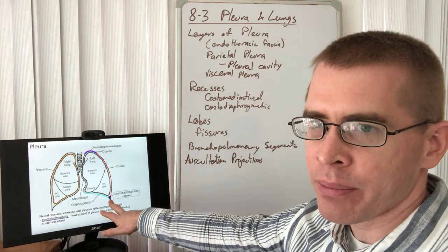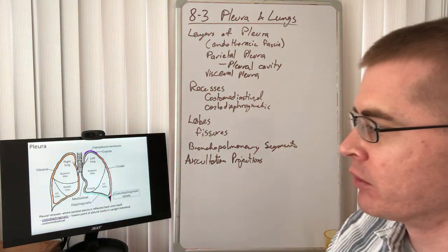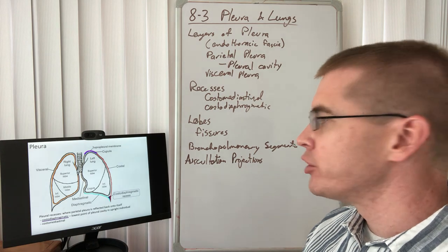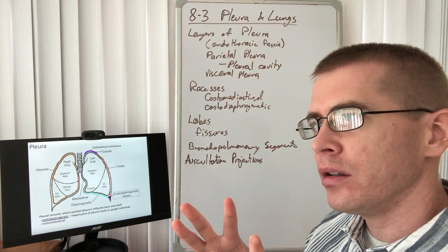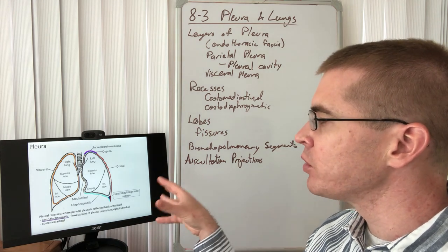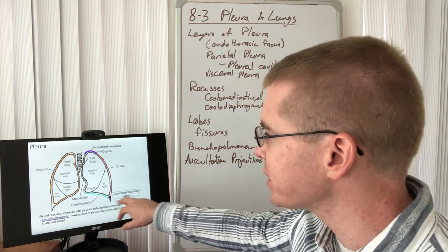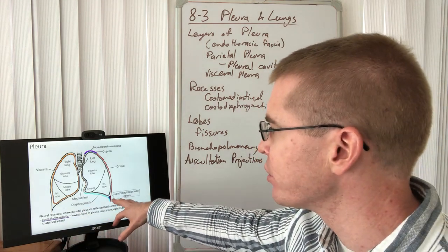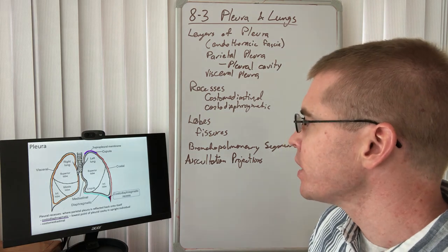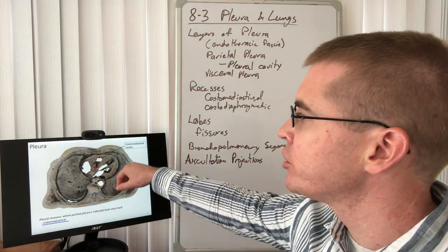The first of these, the costodiaphragmatic recess, is the space between the costal parietal pleura and the diaphragmatic parietal pleura. This is the lowest point in the upright pleural cavity. For this reason, if there is a hemothorax, a buildup of fluid, or pneumothorax, a buildup of air within the pleural cavities, then thoracocentesis can relieve that pneumothorax or hemothorax by sticking a needle in this space. There is also a costomediastinal recess, which is anterior to the mediastinum, anterior to the right portion of the heart.